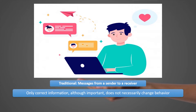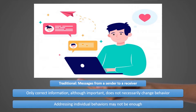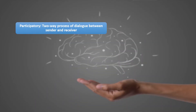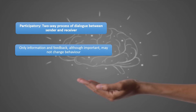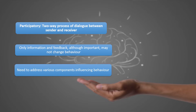We know from research and earlier theorists that addressing individual behavior may also not be enough. Neither is correct information nor addressing individual behavior sufficient. Let's think of a more participatory approach — which you have also been exposed to — where there is a two-way process of dialogue. It may be between a single dyad of a sender and a receiver, or it may be multiple dyads of senders and receivers. However, only information and feedback, although important, may not change behavior.